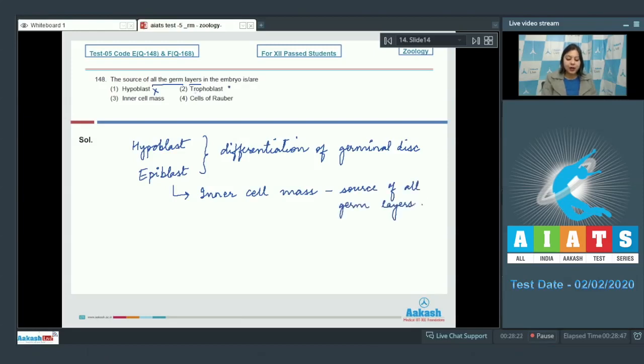Number 2. Trophoblast is also incorrect. Trophoblast cells in contact with embryonal knob are called cells of Rauber. Number 3. Inner cell mass is correct as epiblast derived from inner cell mass is the source of all germ layers.